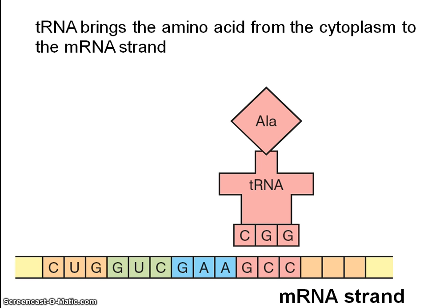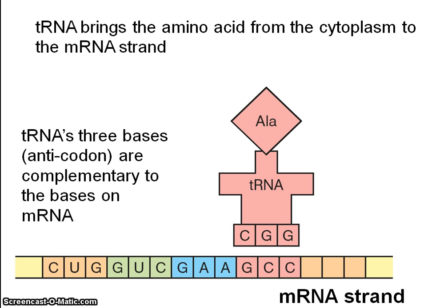Where you find the messenger RNA strand and where those codons and anti-codons are complementary, then binding occurs. Note that the messenger RNA strand GCC is complementary with the anti-codon CGG.